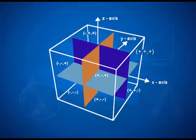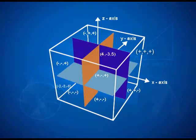In the first octant, all three coordinates x, y, and z are positive. In the second octant, we have negative x, positive y, and positive z, so coordinates are negative, positive, positive. In the third octant, negative x and negative y but positive z gives negative, negative, positive — and so on. For example, the point (−2, −3, −6) lies in the seventh octant, and the point (4, −3, 5) lies in the fourth octant.